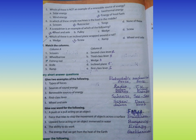Roman numeral four, match the columns. First one: Scissors. Answer E, first class lever. Number two: Wheelbarrow. Answer A, second class lever.